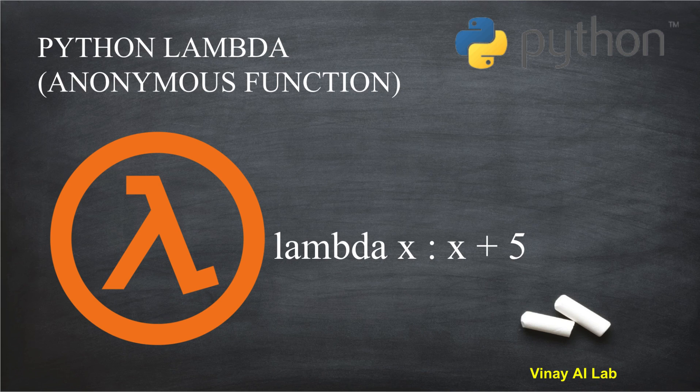A lambda function is just like a normal Python function except that it has no name — it's an anonymous function that contains only one line of code. It's a very powerful and interesting function, so let's get started.